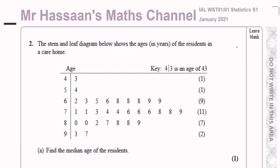Sometimes you might get an unordered stem and leaf diagram where everything's in the right group but not in the right order — you'd have all the 60s there but not sorted. You should always verify first that they are in order of size, which they are, because when finding the median and the quartiles the data must be in order. The median, also known as Q2 or the second quartile, is the entry right in the middle of all the data when arranged in order of size.